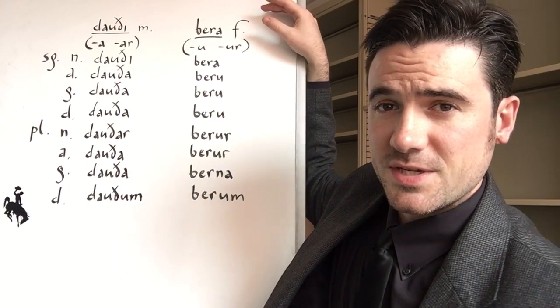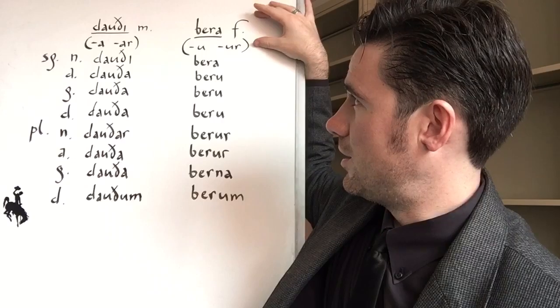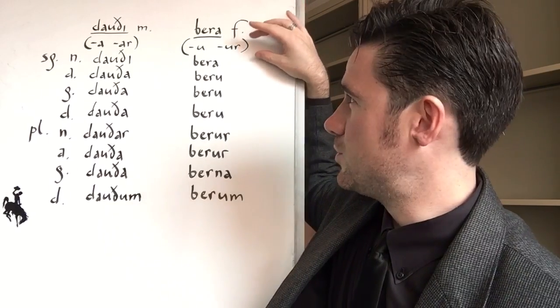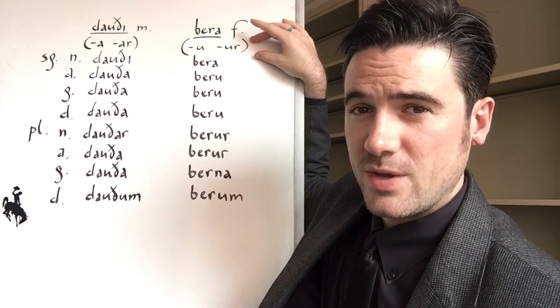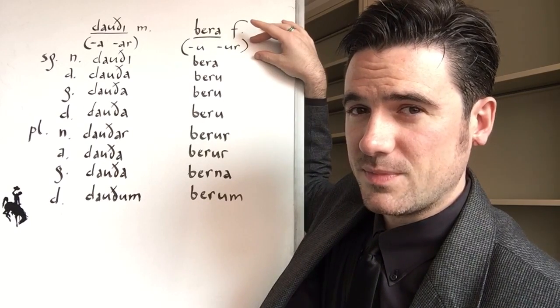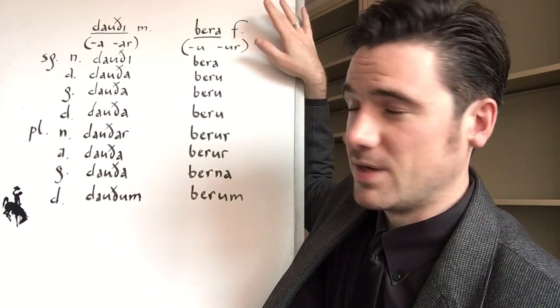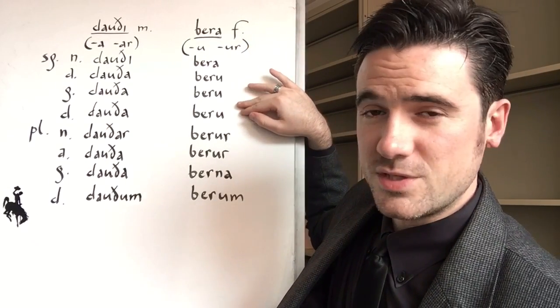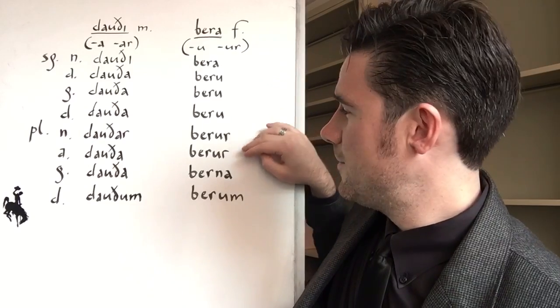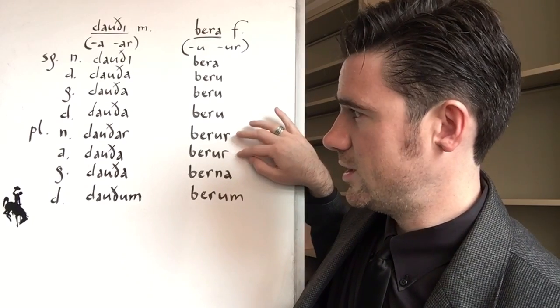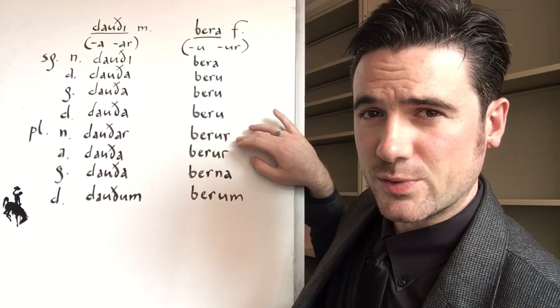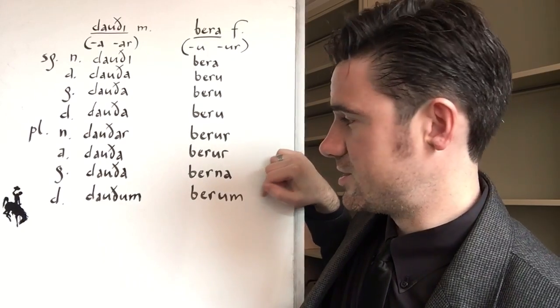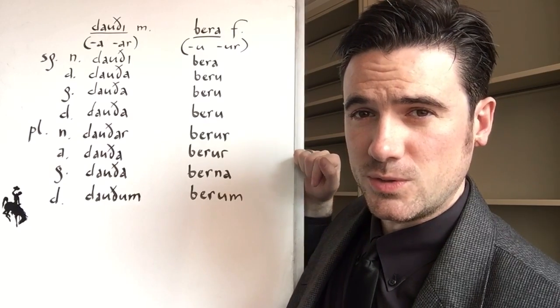Bera, which means female bear, she bear, has an A at the end and it's feminine, so it should be obvious to you that this is a weak feminine. So the accusative, genitive, dative will end in U. Bera, Beru, Beru, Beru, and then we'll have UR in the nominative and accusative plural, Beru, Beru. We're going to have the N before the typical genitive plural A, Berna, and then our typical dative plural ending, Oom.